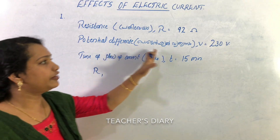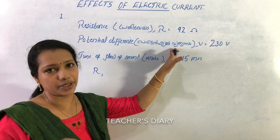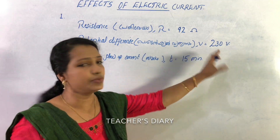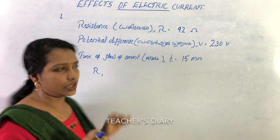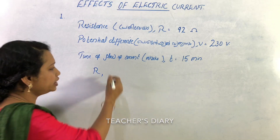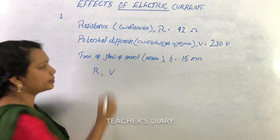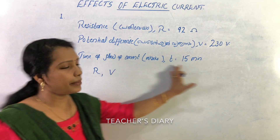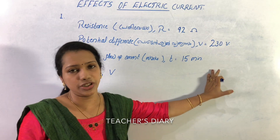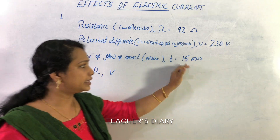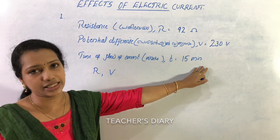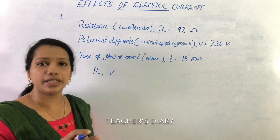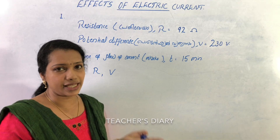The potential difference V is 230 volts. Time is 15 minutes. We need to convert 15 minutes to seconds: 15 into 60, which gives us 900 seconds. We work in SI units.